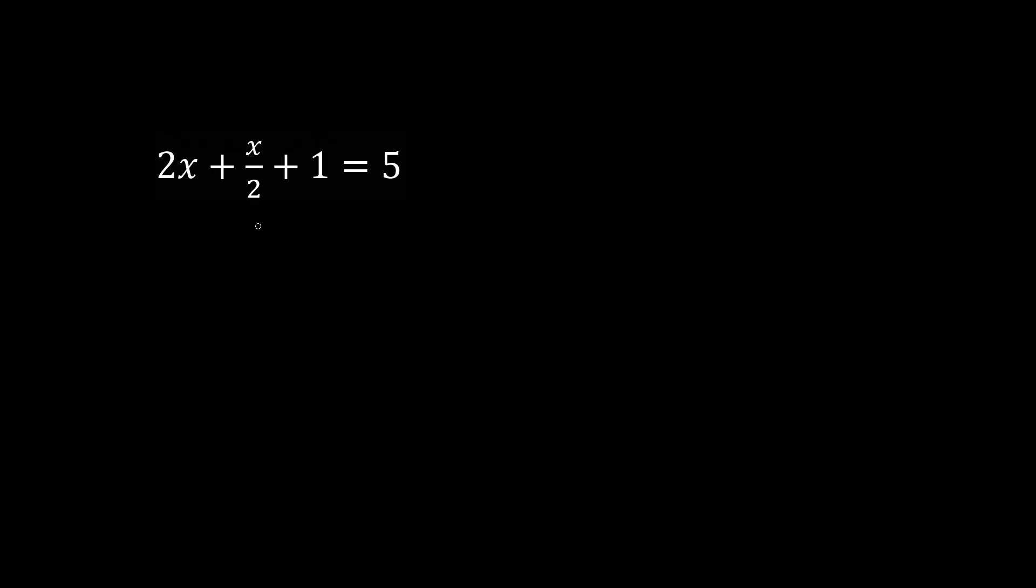When we see a denominator in an equation, it's a good idea to multiply both sides by that denominator, 2. When we multiply both sides by 2, we have a doubling of the terms.